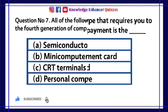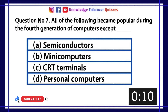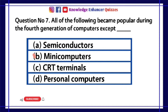Question number 7. All of the following became popular during the fourth generation of computers except dash? A. Semiconductors. B. Mini Computers. C. CRT Terminals. D. Personal Computers. Option B is the right answer.